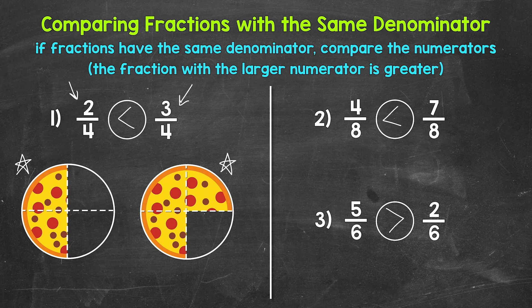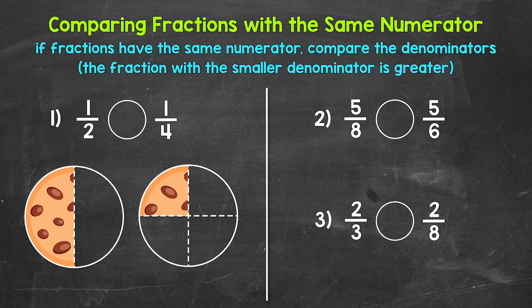That's how to compare fractions with the same denominator. Now let's look at how to compare fractions with the same numerator. Let's jump into number one, where we have one-half and one-fourth. Reading from left to right: one-half is greater than, less than, or equal to one-fourth. Which fraction is greater? If fractions have the same numerator, all we have to do is compare the denominators — the bottom numbers. The fraction with the smaller denominator is greater.